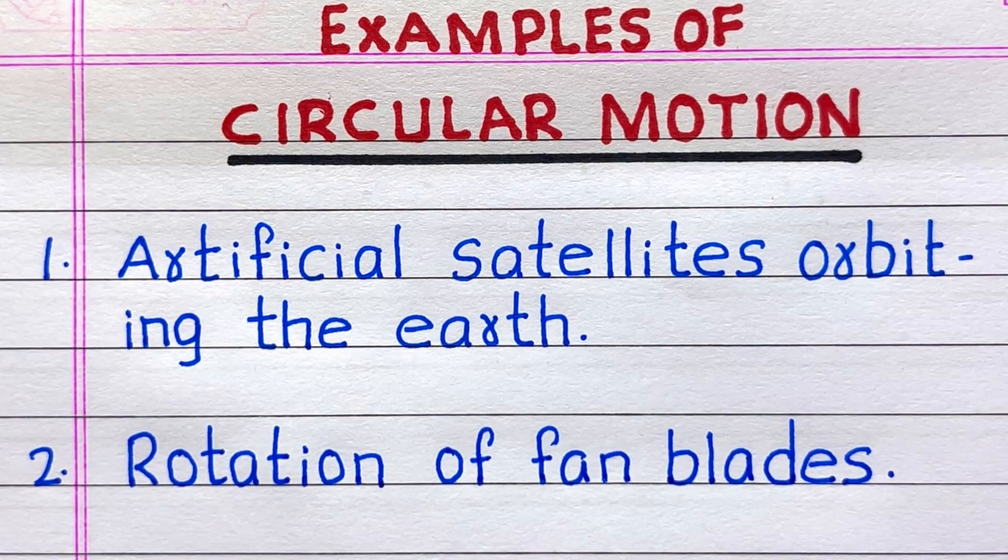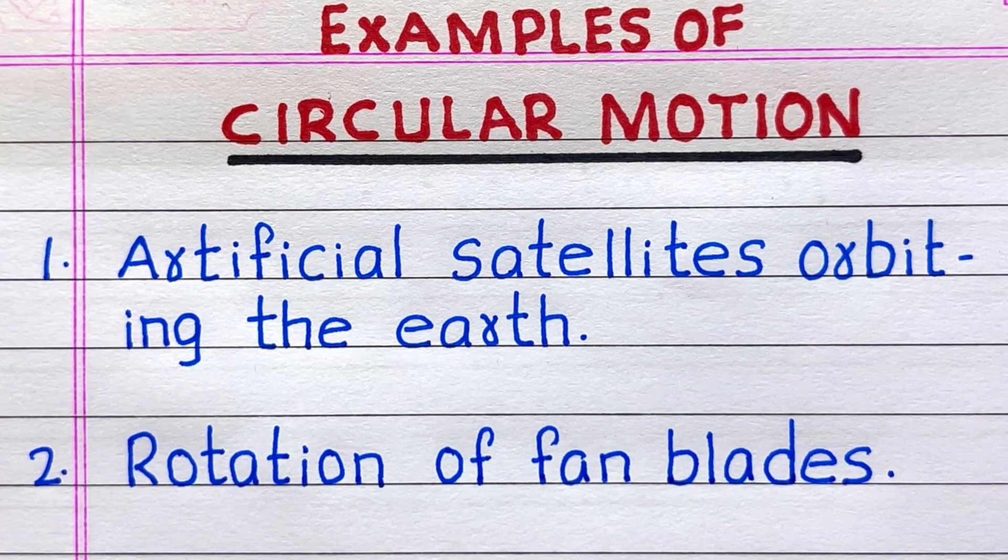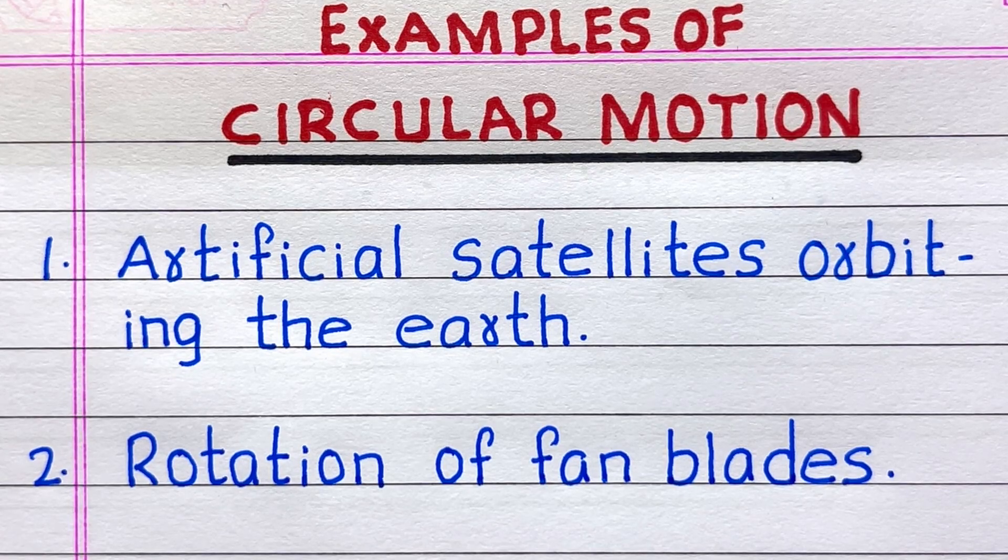First example of a circular motion is artificial satellites orbiting the earth. Second, rotation of fan blades.